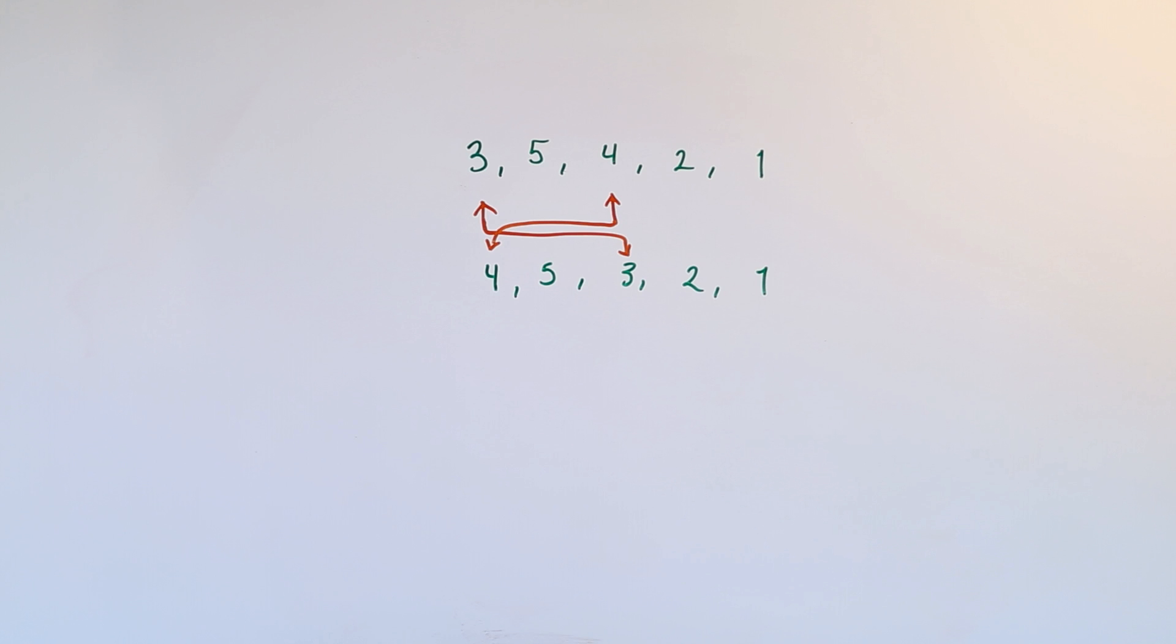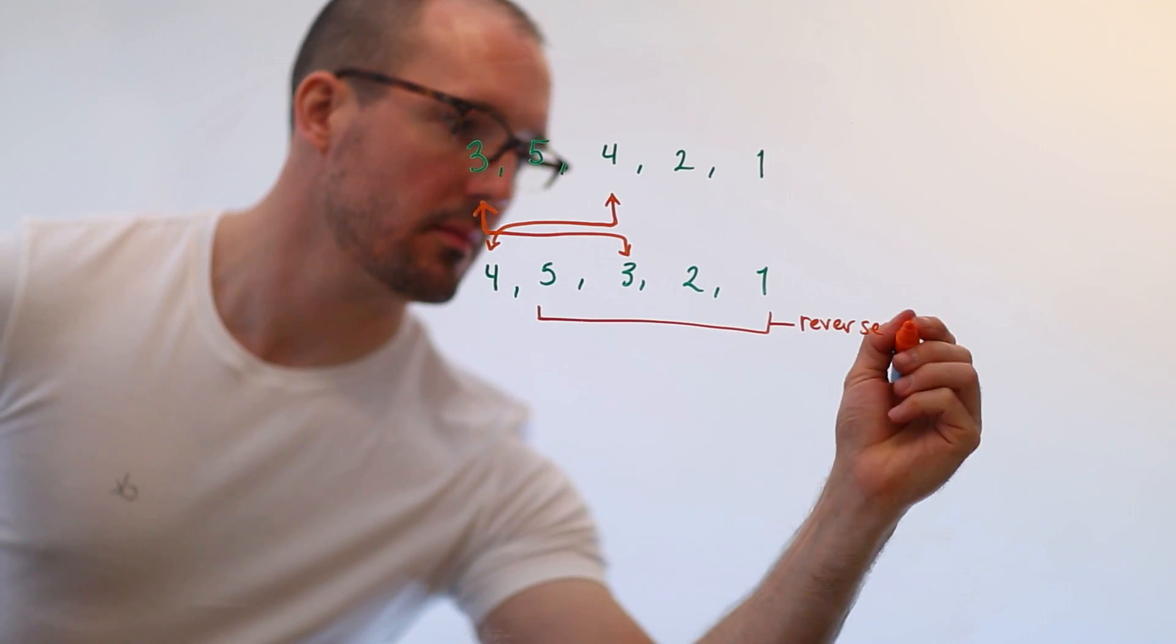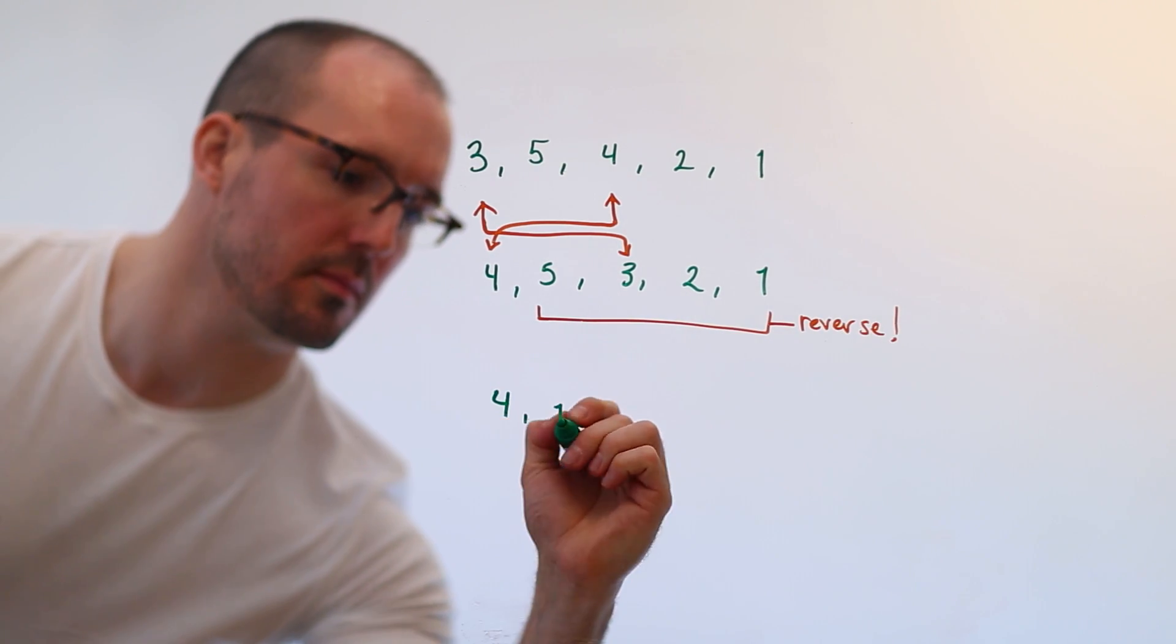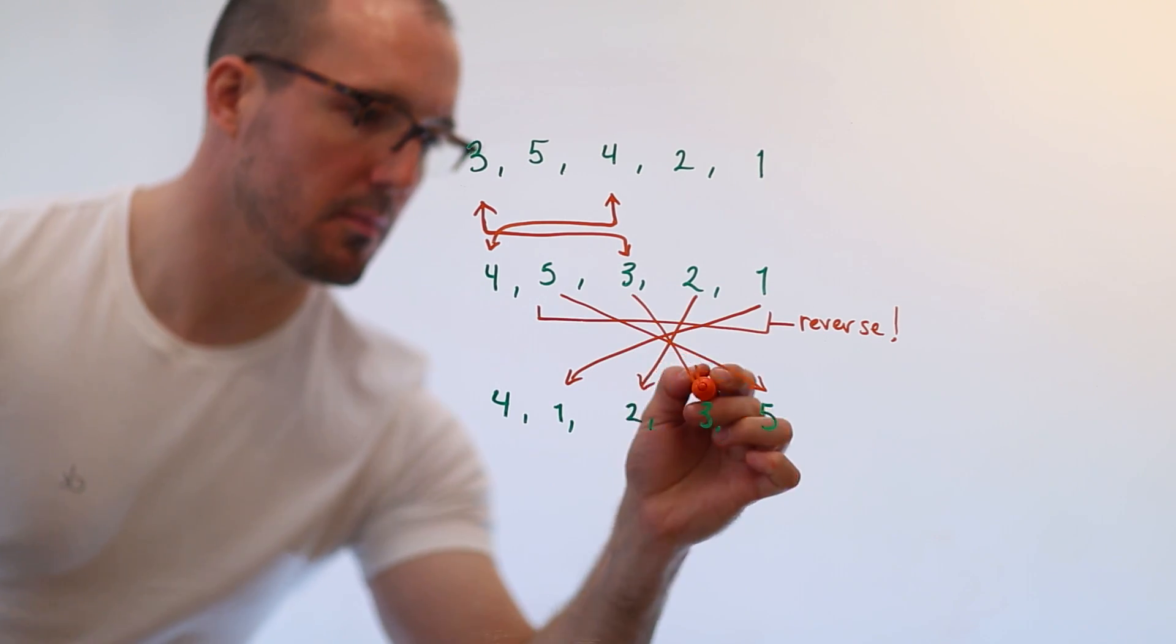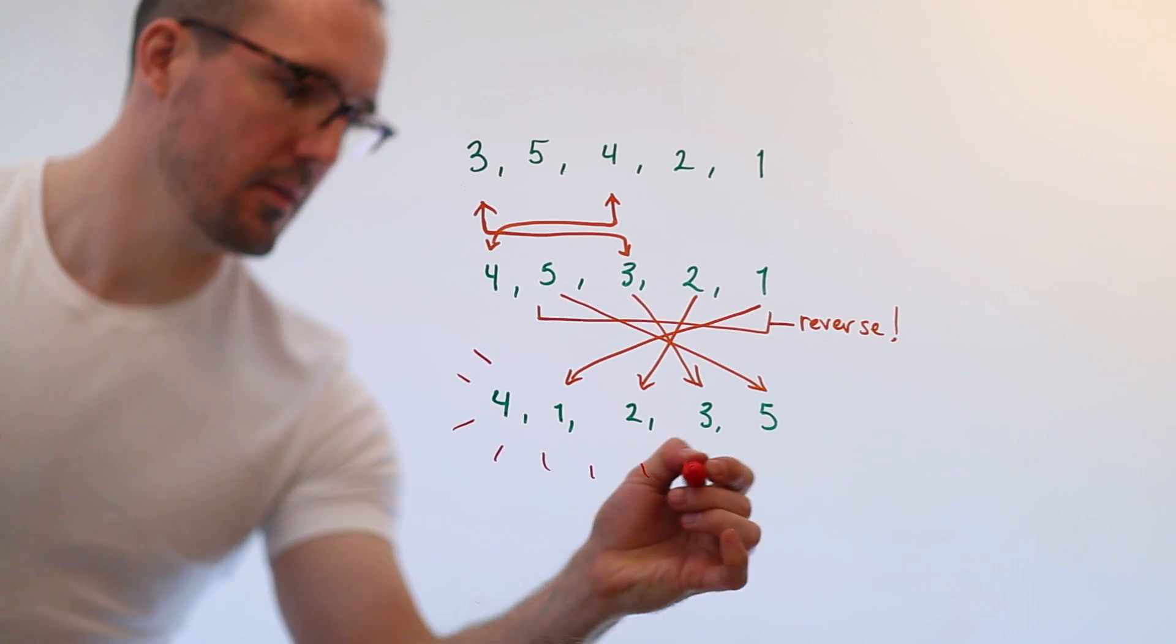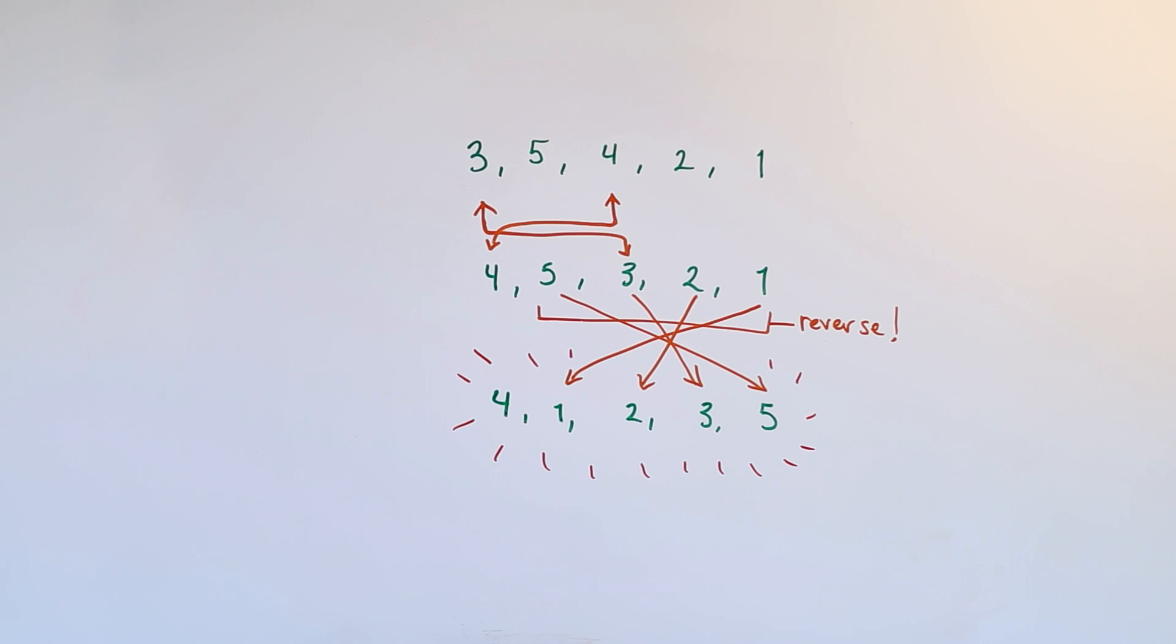And you'll notice at that point that you've got a four, and then you've got a reverse sorted suffix, you could call it, you've got a reverse sorted tail. And so from there, it's really easy to just swap the start of the tail with the end of the tail, and the next one after that with the next to last, and the next one after the next, however many you have to reverse the tail of the list.